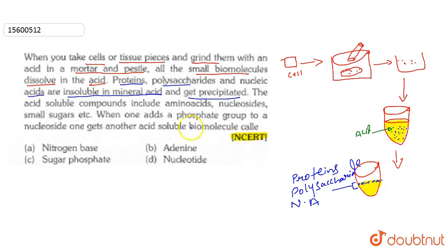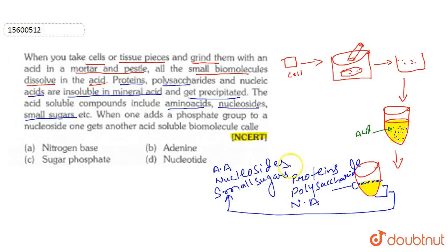Now some things are dissolved in the acid. The acid soluble compounds include amino acids, nucleosides, and small sugars. Let's write it - amino acid, nucleosides, and small sugars. These are dissolved in this acid.